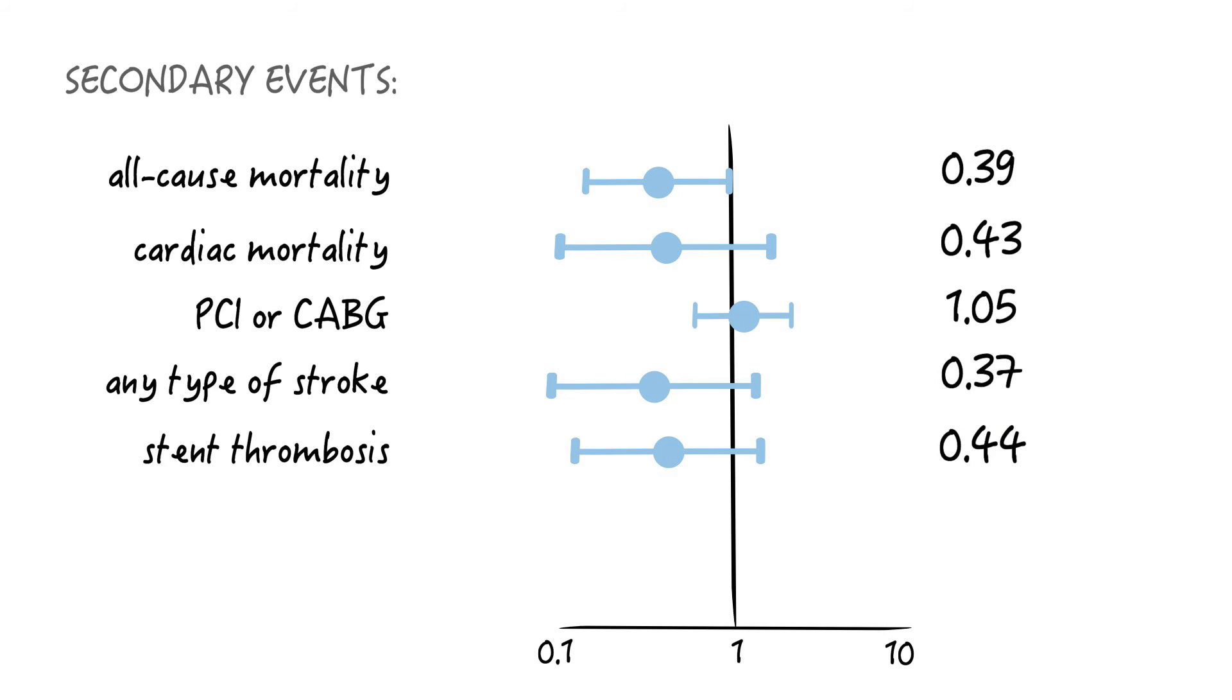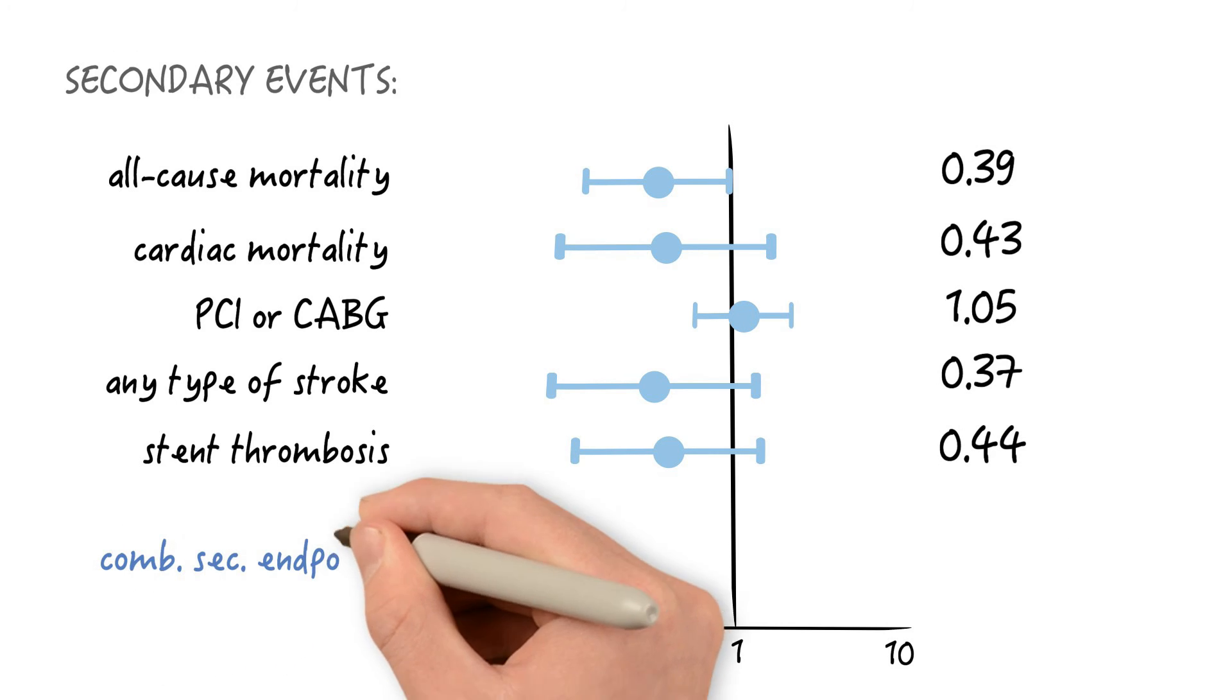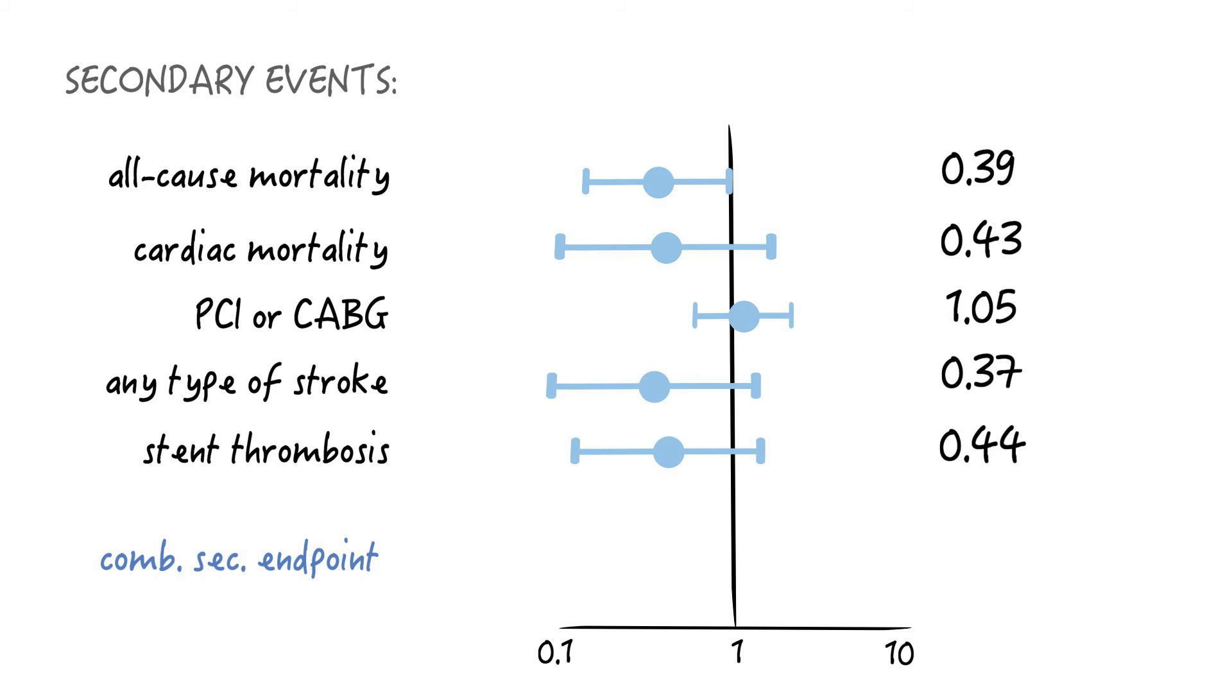Now, what happens if you take all of these outcomes together? If you do that, you'll arrive at a hazard ratio of 0.6, which is now statistically significant. And this means that the secondary endpoint of all of these outcomes combined is 40% less likely in the double therapy group.